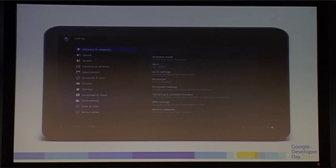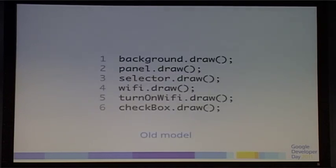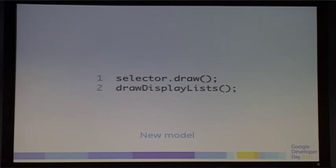As an example: in the settings, clicking the Wi-Fi button makes it go grayed out. Previously we'd have to run through background draw, panel draw, selector draw, Wi-Fi draw, turn-on Wi-Fi draw — all these different elements of that one view group. Now, we draw the selector and the display lists. Everything else happens transparently and very fast.